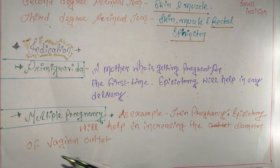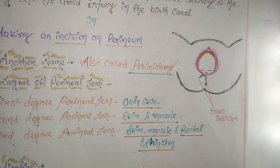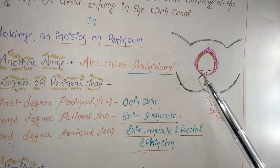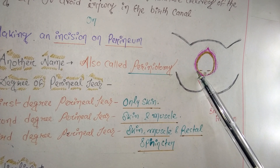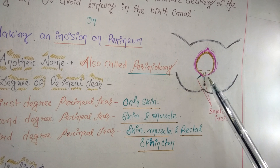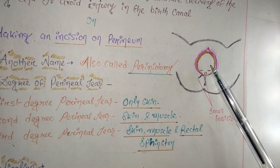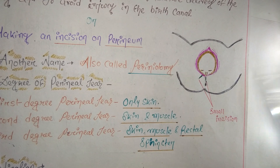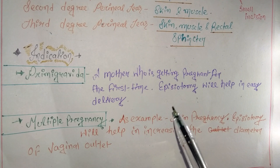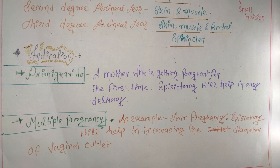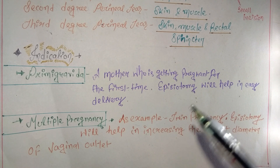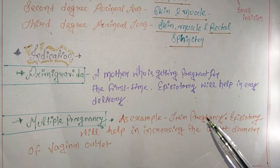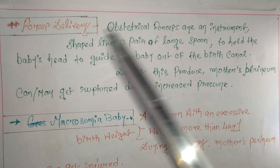Second indication: multiple pregnancy — for example, twin pregnancy. If a mother carrying twins is having a normal delivery, episiotomy increases the diameter of the vaginal outlet, making the delivery process easier and avoiding perineal rupture or third-degree perineal tear.